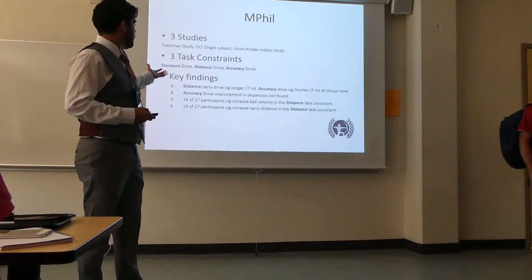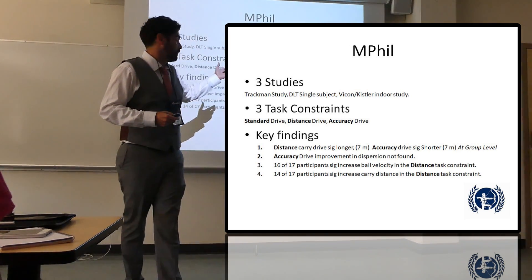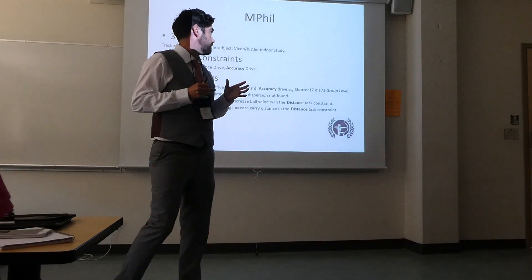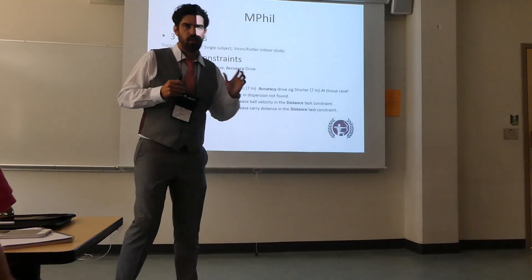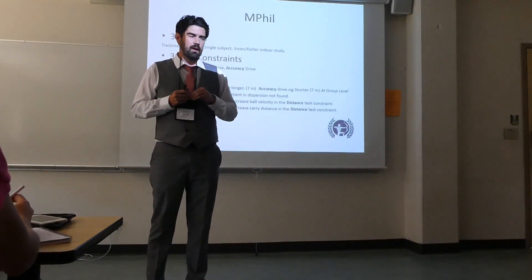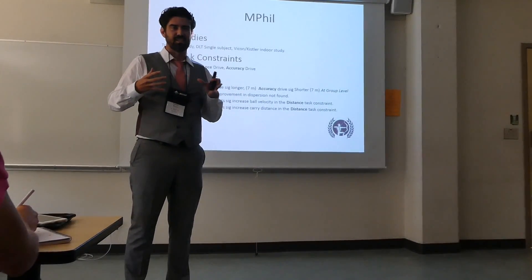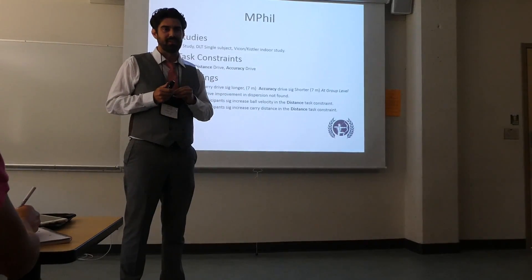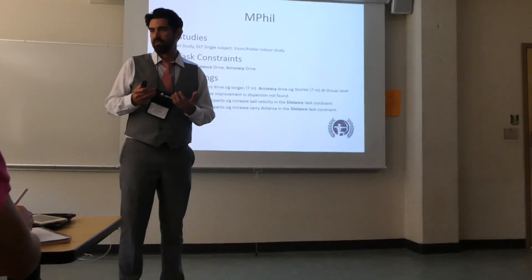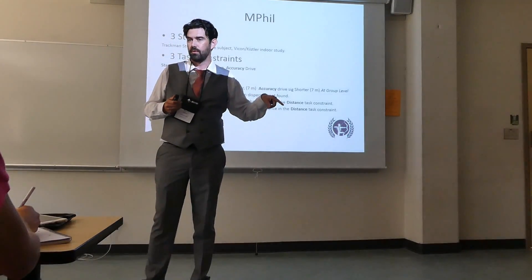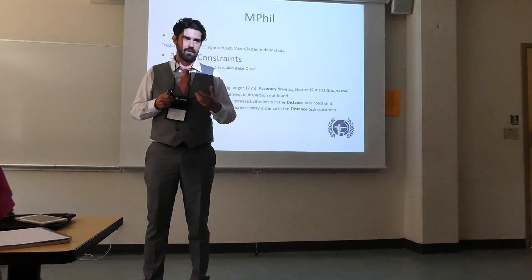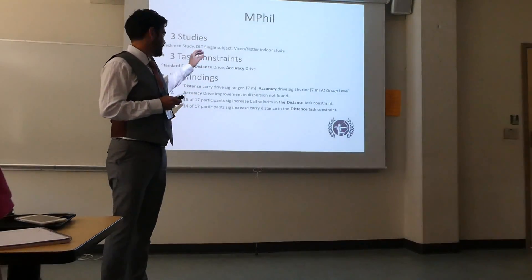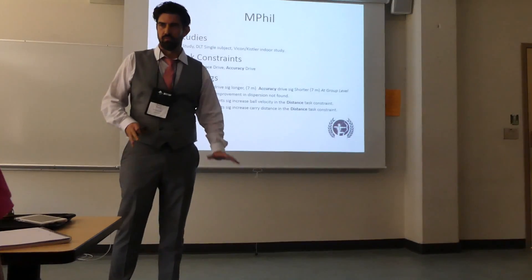That got me interested in looking at three different conditions. I had performers hit 20 balls normally, 20 balls trying to hit the ball further, and 20 balls trying to play for accuracy. I did three studies within that. The first was just TrackMan - not looking at the body at all, just what the ball was doing. I did a DLT study - direct linear transformation - where I manually digitised a single person to understand why they were having some changes. Then the last study I went back inside, used Vicon and Kistler, including some force data.